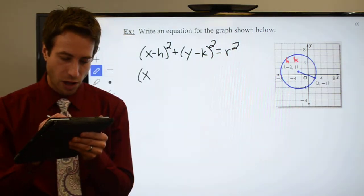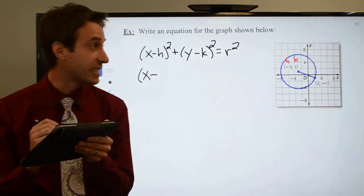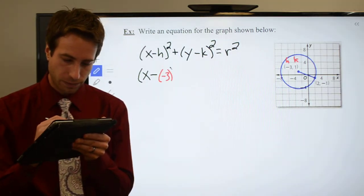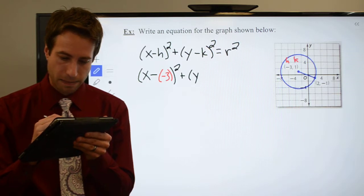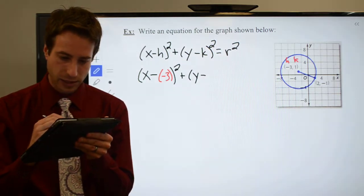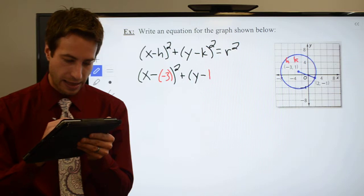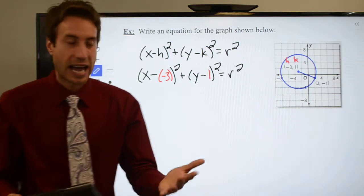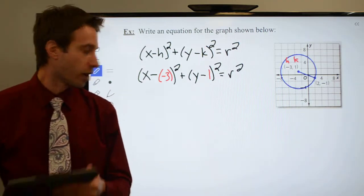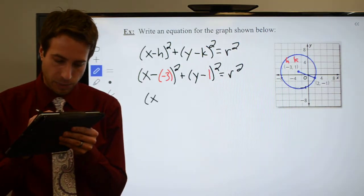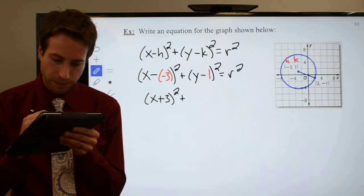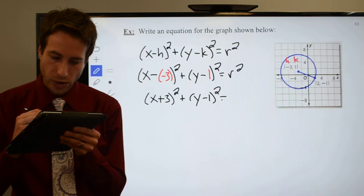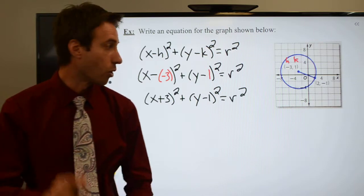I have x, careful of your signs, it's x minus and h is a minus 3, careful, plus y minus my k is a 1. So I'm just going to throw that in there, it's squared, that's all equal to r squared. And so right away without really having to do a whole lot of work, I've got x plus 3 squared plus the quantity y minus 1 squared is all equal to r squared.